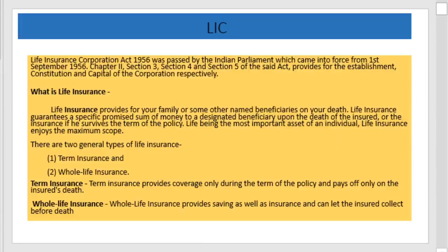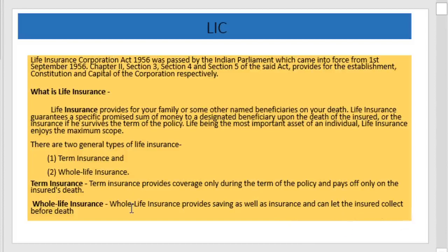There are two general types of life insurance: term insurance and whole life insurance. Term insurance provides coverage only during the term of the policy and pays off only on the insured's death. Whole life insurance provides savings as well as insurance, and can let the insured collect before death.